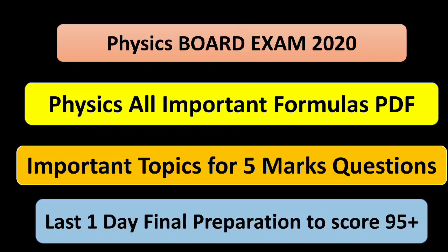Many students think that physics has a lot of numericals and that the theoretical parts will not be so much — but that is wrong. You have to pay attention because theoretical parts come a lot. Numerical parts will come, but not as much as theoretical parts. So you should go through the theoretical parts so that you have a very good score.